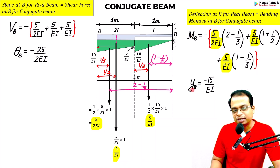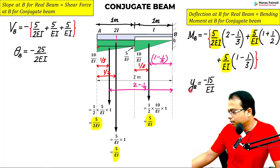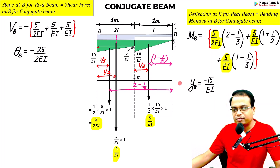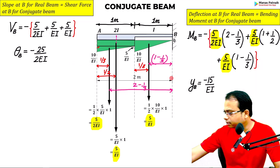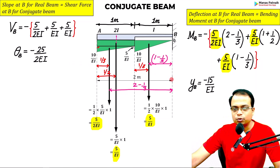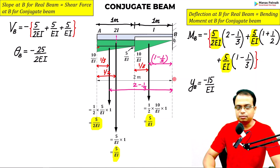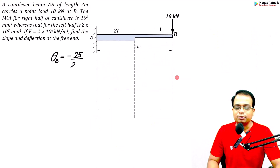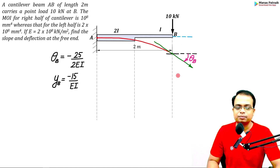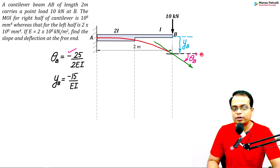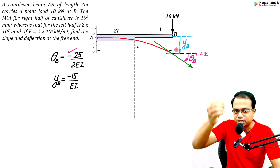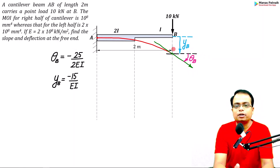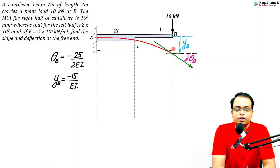The results are: slope θ = −25/(2EI) and deflection δ = −15/EI. Both are negative — the negative sign for slope indicates the angle is measured clockwise with respect to the positive x-axis, and the negative deflection means the point is displacing downward.